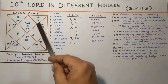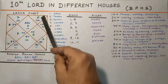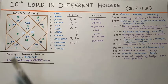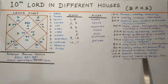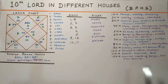If the 10th Lord is placed in the 12th house, the native will spend through royal abodes, will have fear from enemies, and will be worried in spite of being skillful. So friends, we have now done the results of the 10th Lord placed in different houses.